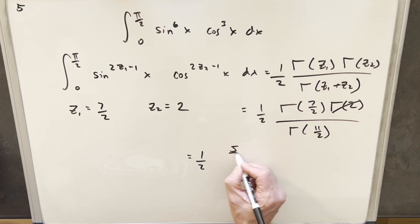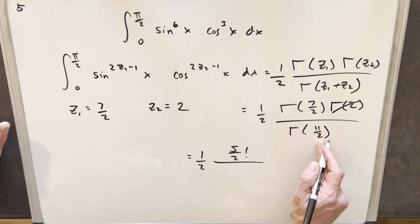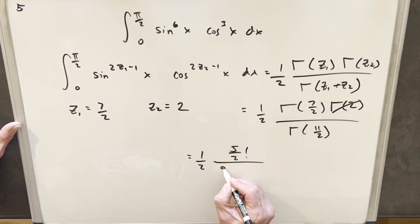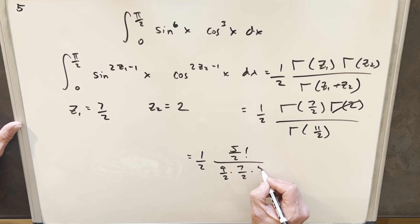Then 11/2 is going to be (9/2)!. And what I'm going to do is write that out as (9/2) × (7/2) × (5/2)!.